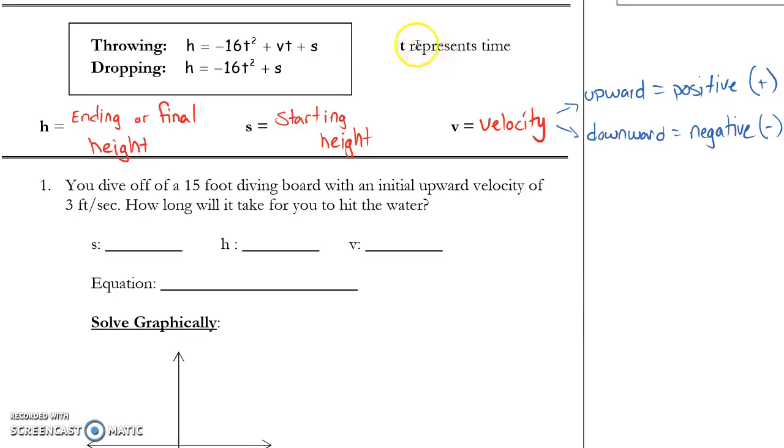For our purposes here, t is always representing time and it's also replaceable by x. So as we're using our graphing calculator, we're not going to use t in our graphing calculator. We're going to use x, and it represents time.